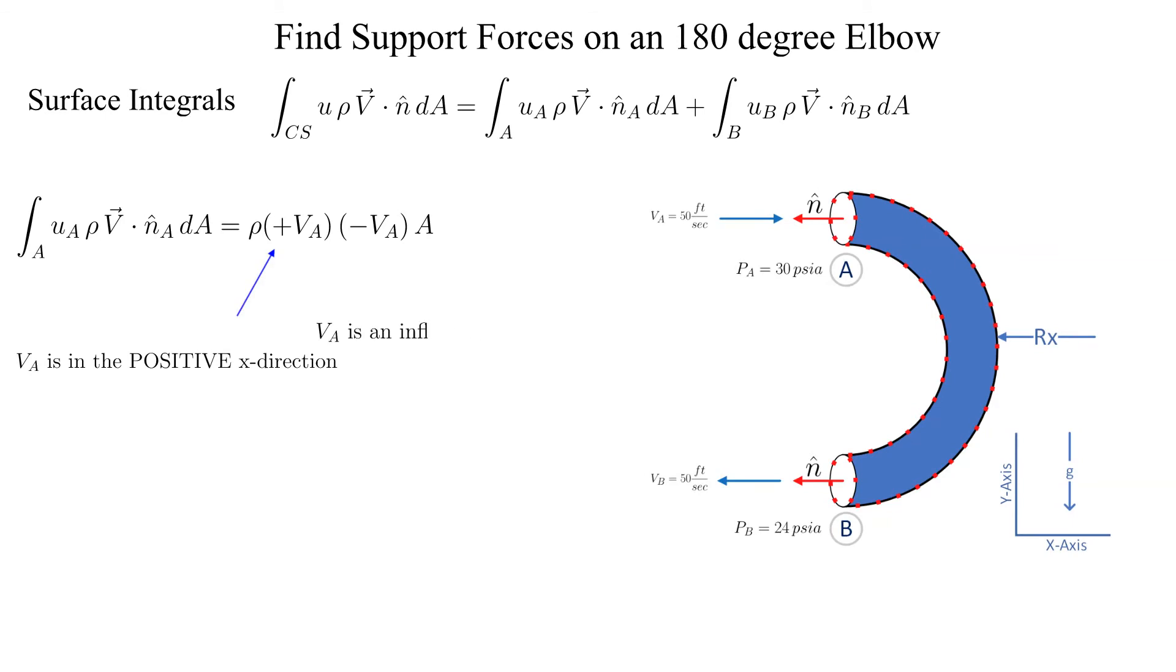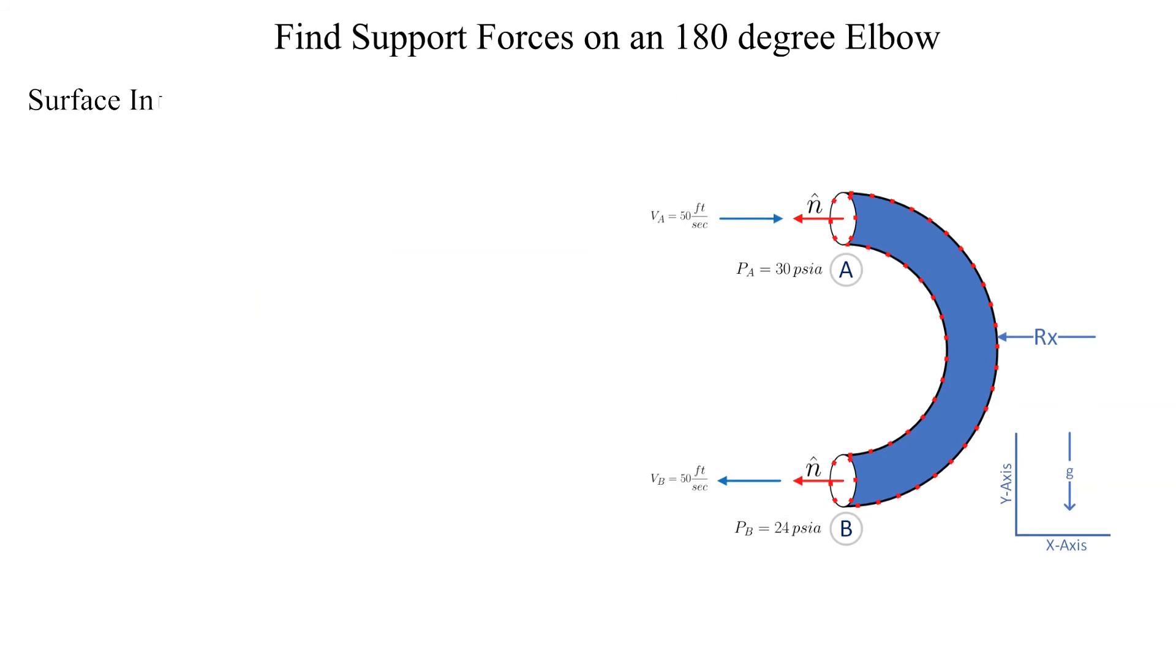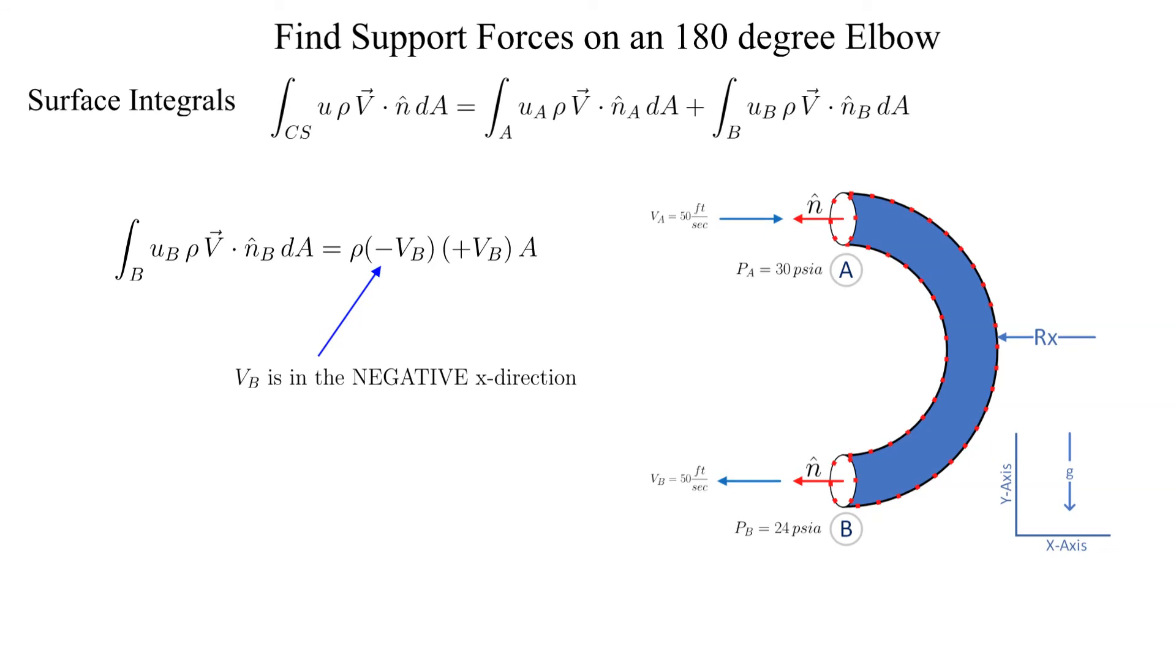The dot product returns a negative sign since the flow at surface A is an inflow. Doing the same for surface B, but in this case the x component of velocity at B is in the minus x direction. The dot product returns a plus sign since the flow at B is an outflow.